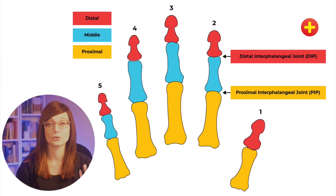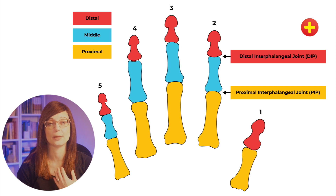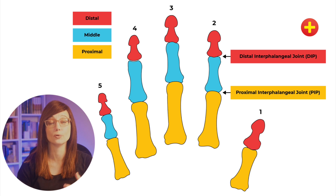Before you start talking to or examining the child, it's important to know the anatomy. The fingers have three bones: the distal, the middle, and the proximal phalanx, and there are two joints. The one furthest away from the child is the distal interphalangeal joint, and the one closest is the proximal interphalangeal joint. The thumb has two bones — the distal and proximal phalanx — and one interphalangeal joint.